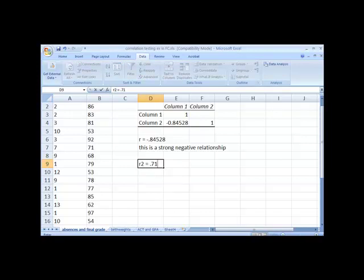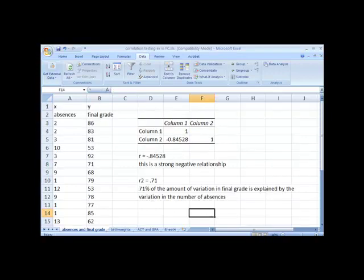So R squared is approximately .71. Let's use our phrase again. The measure of the variation in Y that is explained by the variation in X. 71% of the amount of variation in final grade is explained by the variation in the number of absences.